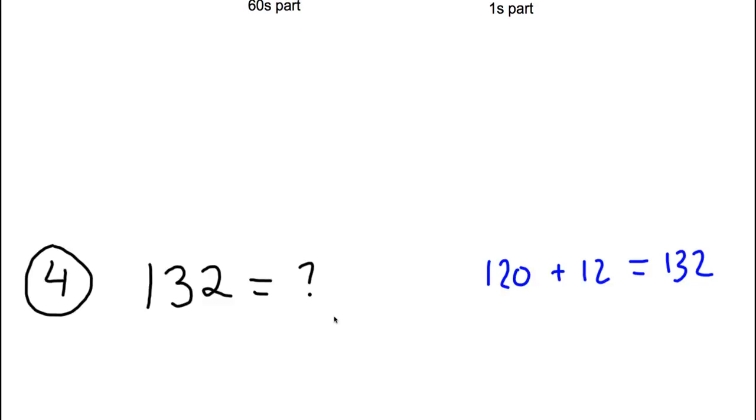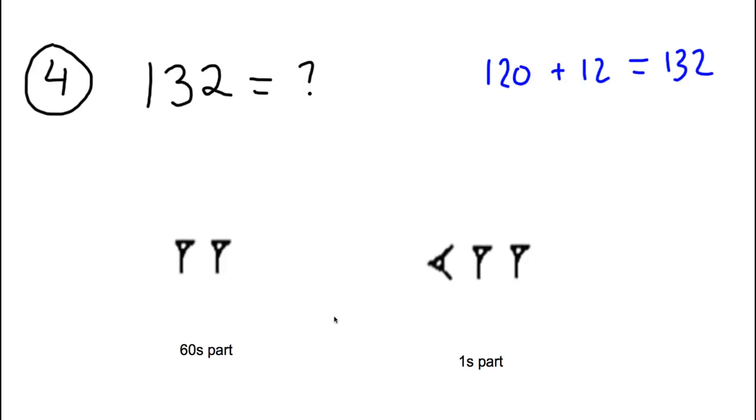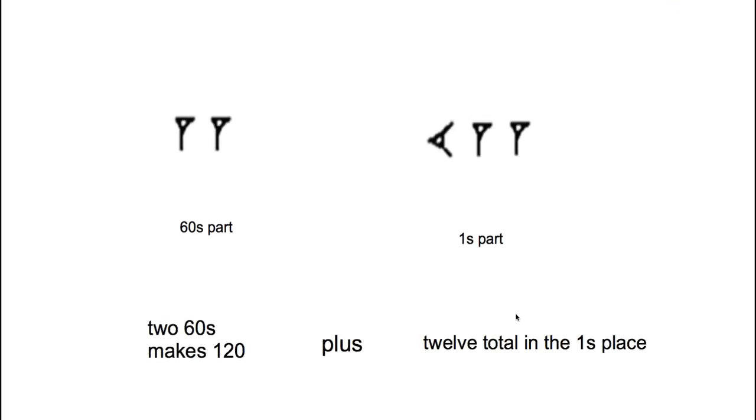How about the number 132? How would you have written if you were an ancient Babylonian 5,000 years ago? What I would do is I'd think about how many 60s that is. It's sort of like saying if that was 132 minutes, how many hours do you have and how many minutes left over? You'd have two hours and 12 minutes. 132 can be broken up into two 60s and 12 ones. So here's where I put two ones in the 60s place. I'm saying two in the 60s place and 12 in the ones place. That's how I create 132 in Babylonian numbers. Two 60s makes 120 plus 12 total in the ones place. This is 12, and this is 120, and that makes 132.